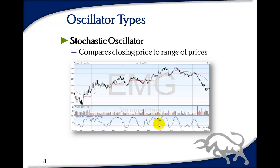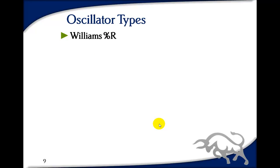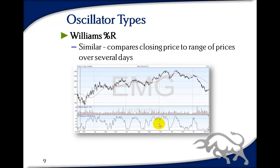The Williams %R is very similar — it compares the range of closing prices for the day to the range of prices over several days. This is a 20-day version and it looks quite peaky. You probably don't want to be trading all those ups and downs, but you can play with the rules to get a smoother oscillator, or quite often you would set up a second oscillator such as the RSI and only trade if both oscillators said the price was overextended — providing some control to stop random trading.